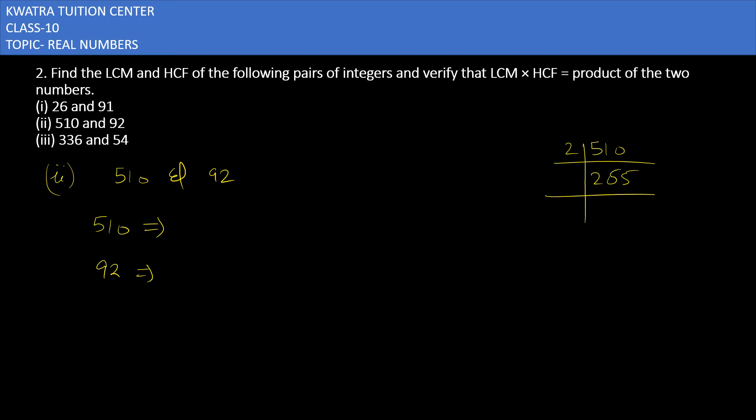Sorry, 255. Let me rewrite: for 510 divided by 2 is 255, then divisible by 3 gives 85, then divided by 5 gives 17. So 510 can be written as 2 × 3 × 5 × 17.